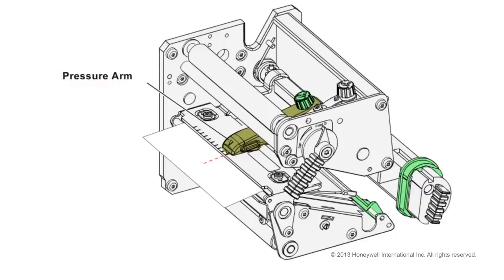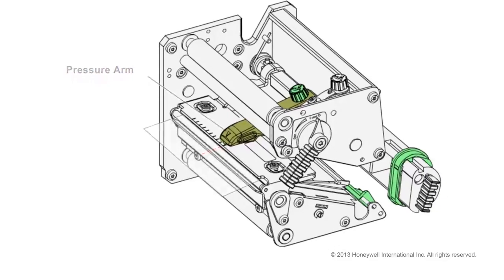The pressure arm should always be adjusted so that it is located at the center of the installed media. When changing from one size of media to another, you should always adjust the location of the pressure arm to ensure print quality.